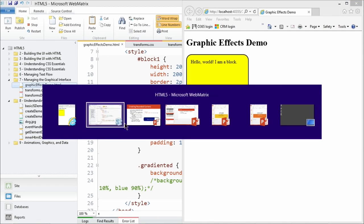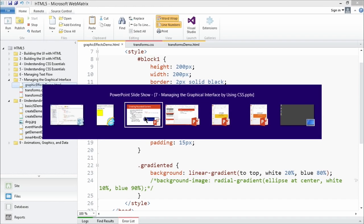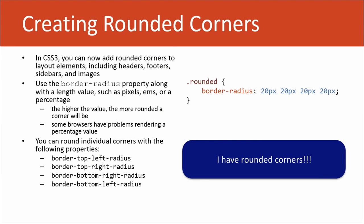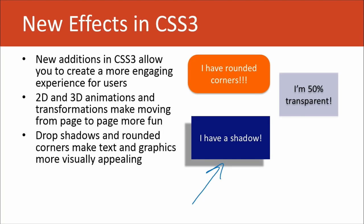Pretty easy stuff — you've probably been adding rounded corners in PowerPoint for years. Now CSS allows you to do that in your web documents more easily as well. So let's talk about creating shadows. Our friend with the shadow — it may not look exactly like that, but we're going to try.